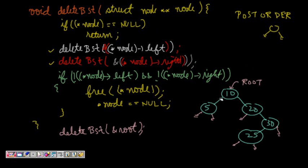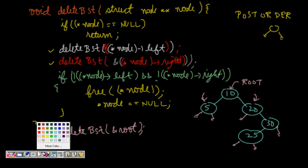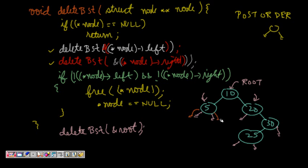I call deleteBST with the root pointer. It's not null, so it calls deleteBST on node->left, going to node 5. From node 5, it calls deleteBST on its left — that's null, returns. Then deleteBST on its right — also null, returns. Now node 5's left and right are both null, so we free node 5 and set it to null.